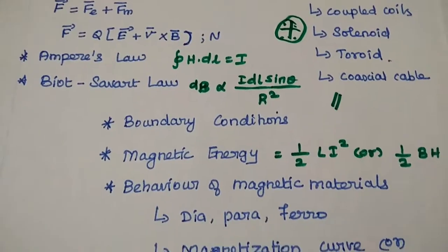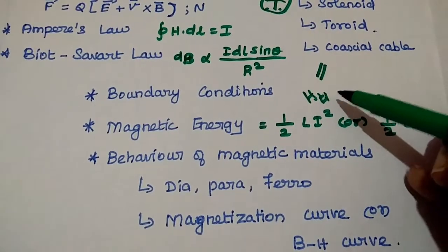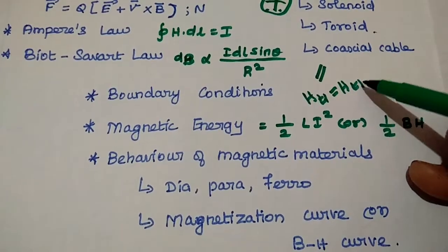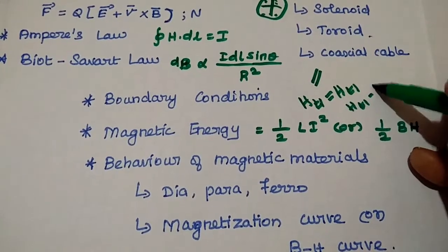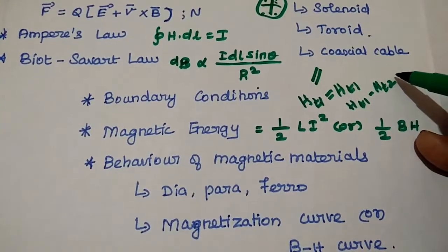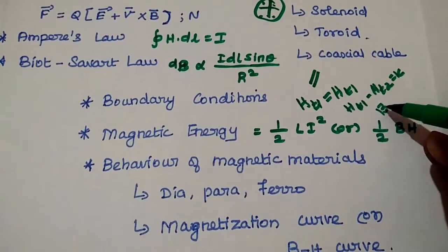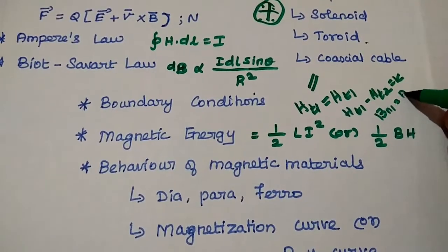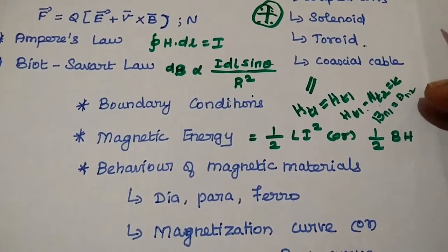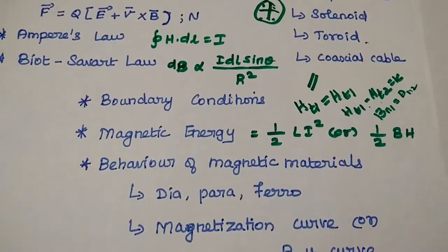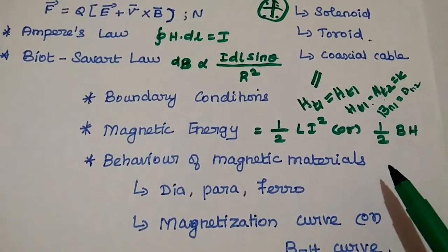Apart from that, we have boundary conditions for magnetostatics. The tangential component of magnetic field intensity is continuous across the boundary, except for a good conductor — for a good conductor it is discontinuous. Also, magnetic flux density is continuous across the boundary: B_N1 equals B_N2. You must remember these boundary conditions. Magnetic energy is represented as (1/2)LI² or (1/2)B dot H, which is also an important two-mark question.